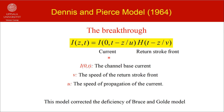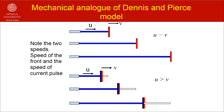There are two speeds associated with this model. The current at any given point on the return stroke channel is a product of two functions: an upward moving current moving with speed u, and an upward moving potential front moving with speed v. The function h here represents a step function. The current at any given point exists for times greater than z divided by v, where z is height.